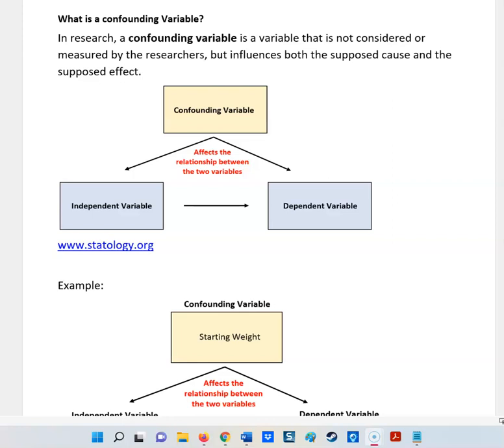So in words, a confounding variable is a variable that is not considered or measured by the researchers, but it influences both the supposed cause and the supposed effect.